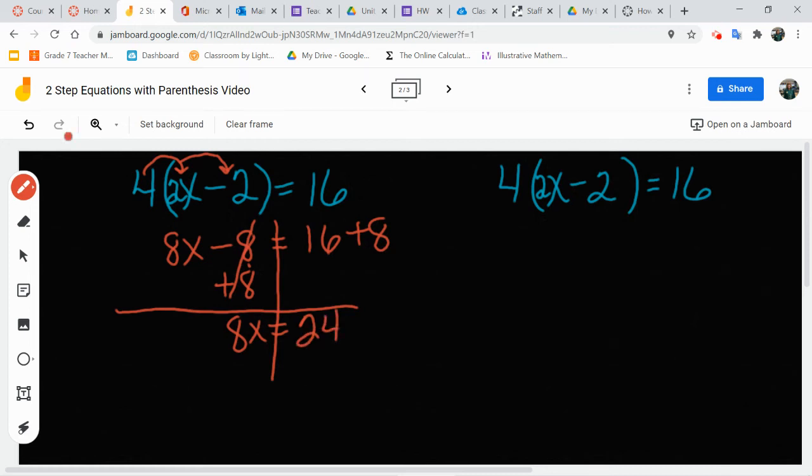Now we're going to divide both sides by 8, divided by 8, divided by 8, and again, this gives us 1, 8 divided by 8, 1x, which equals 24 divided by 8 is 3.